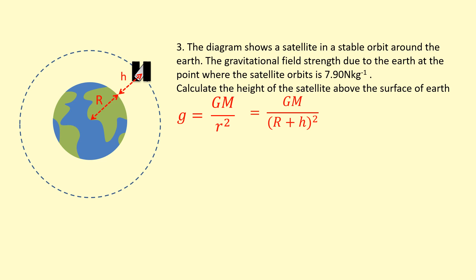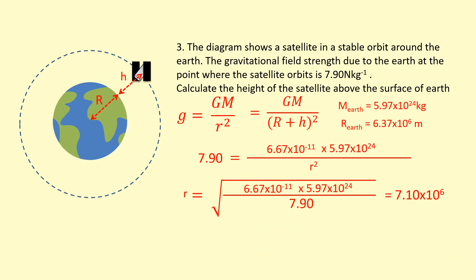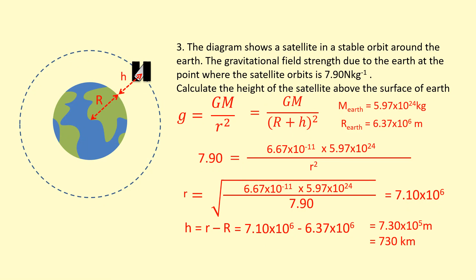I need the mass of the Earth and the radius of the Earth from my data sheet. Setting up the equation with gravitational field strength g = 7.9, I rearrange to solve for lowercase r first: bring r² to one side and take the square root, giving us the radius from the center. Then I subtract the radius of the planet to get the height. So we take 7.10 × 10⁶ minus the radius of the Earth, and that gives us the height above the surface at which the satellite is orbiting, which is around 730 kilometers.